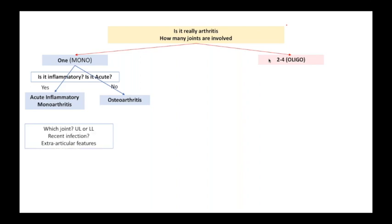Next question you ask is, which joint is involved? Is it the upper limb or the lower limb? Was there evidence of recent infection and what are the extra-articular features?